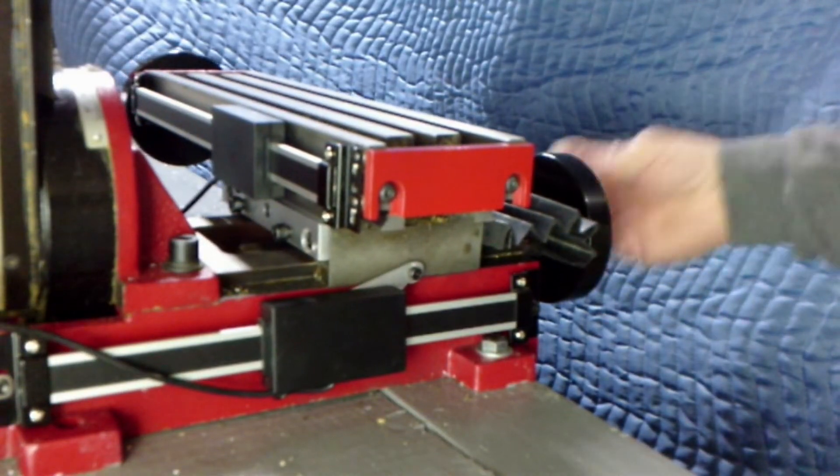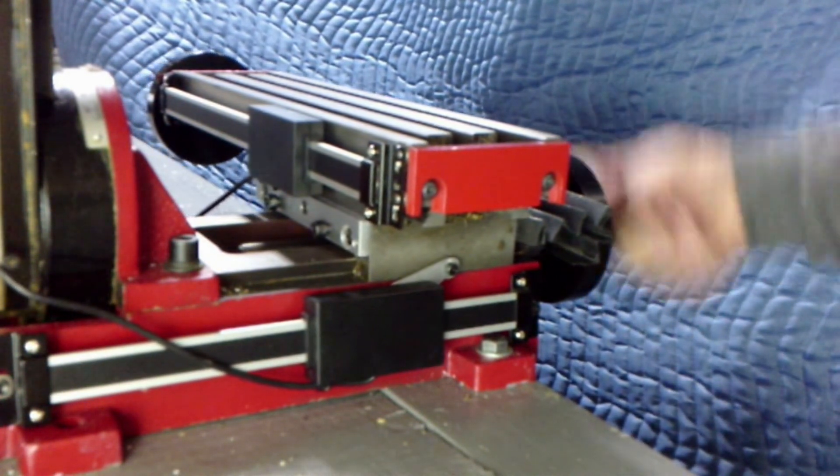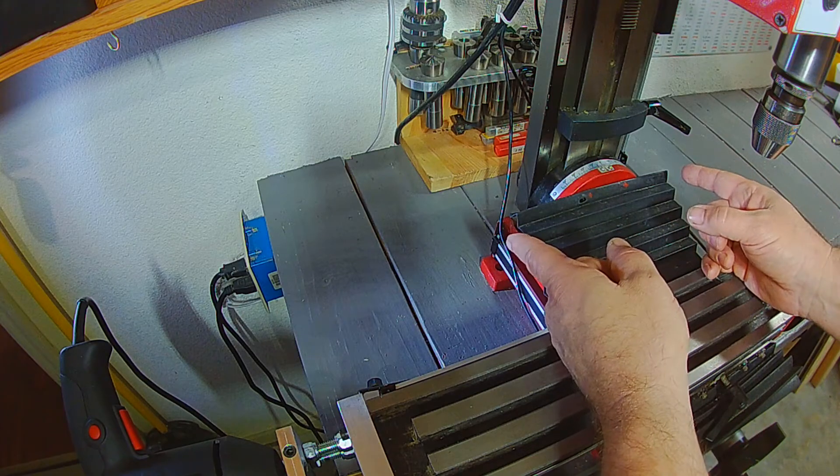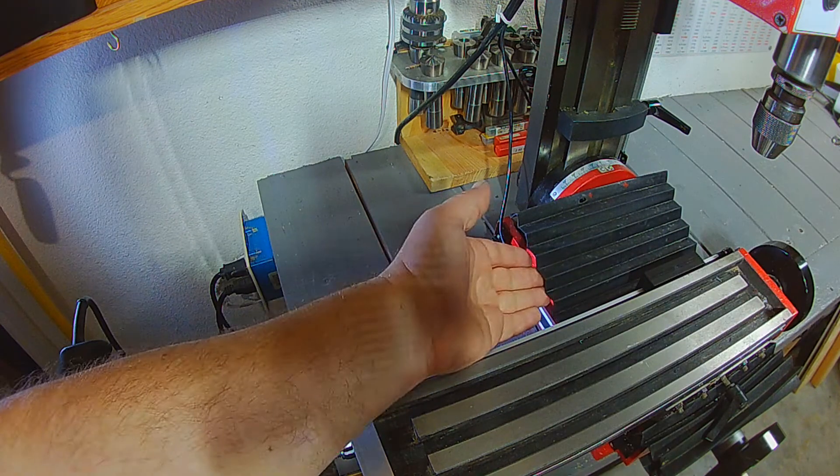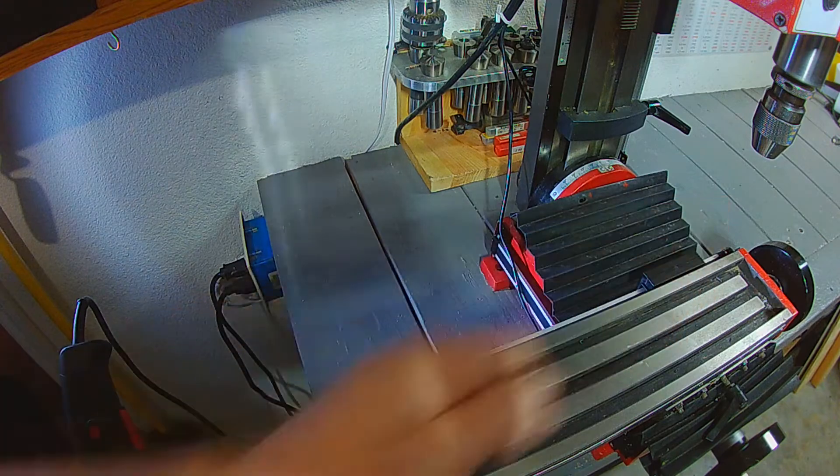You can see here how the scales and readers are exposed to the elements. I relocated the rear way cover to the left to give protection to the Y axis scale, but the X axis is still exposed.